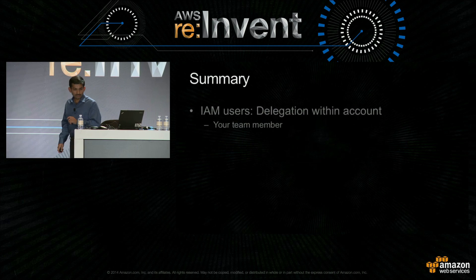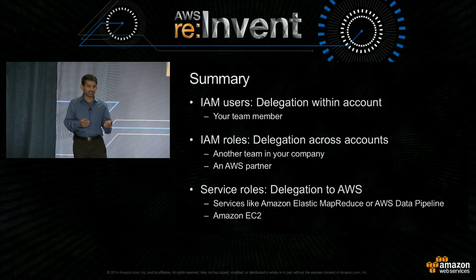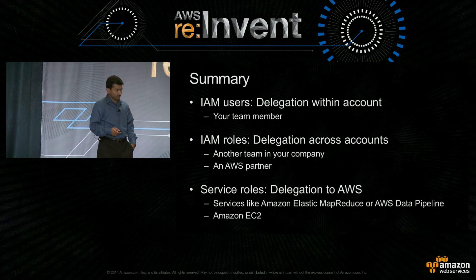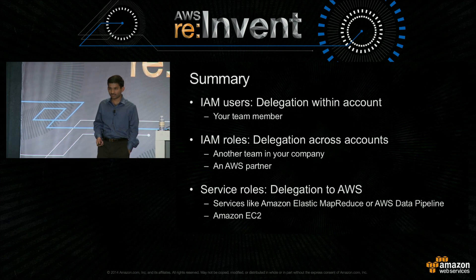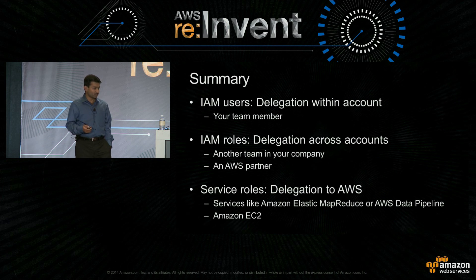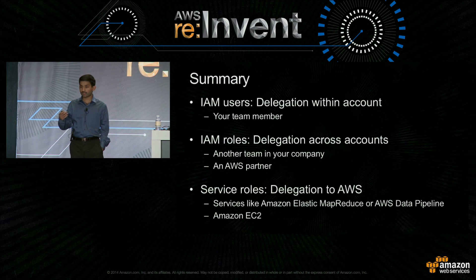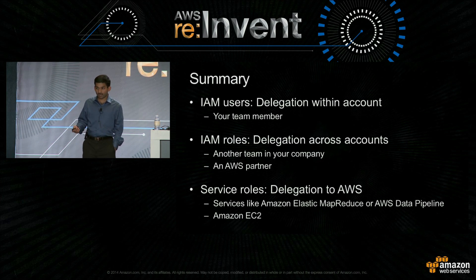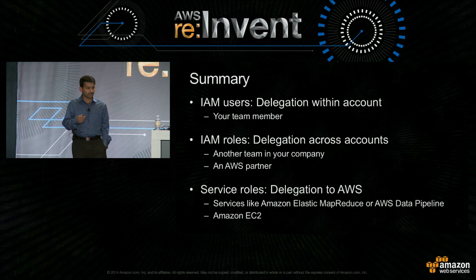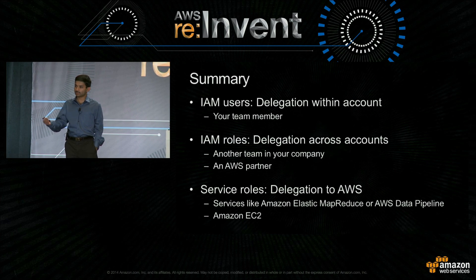So in summary, we looked at three scenarios. You can use IAM users to securely delegate access within your account. You can use IAM roles to delegate access across account — and this can be someone inside your company or outside your company, like an AWS partner. You can use service roles to securely delegate access to an AWS service, like Amazon Elastic Transcoder, AWS Data Pipeline, Amazon Elastic MapReduce, and so forth. And finally, you can delegate access to Amazon EC2 if you have applications running on EC2 instances that want access to AWS services.